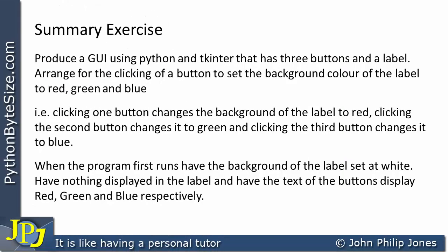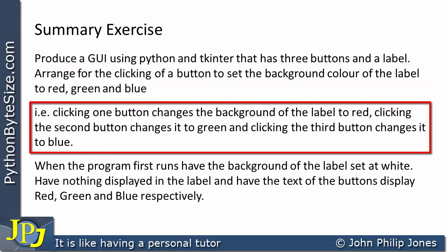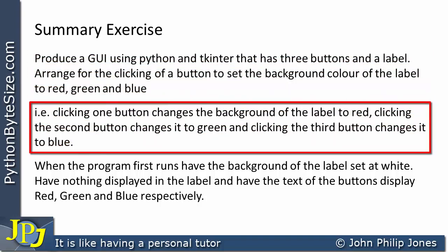This is the summary exercise. I'm asking you to produce a graphical user interface using Python and TK Inter that has three buttons and a label. Arrange for the clicking of a button to set the background colour of the label to red, green, and blue. That is, clicking one button changes the background of the label to red, clicking the second changes it to green, and clicking the third changes it to blue.